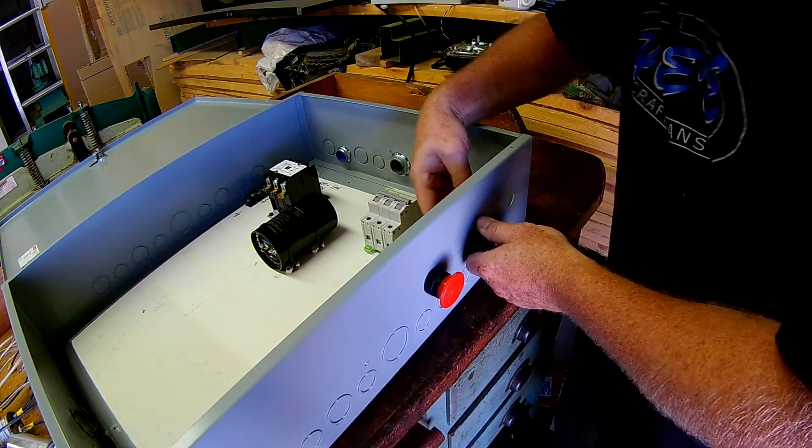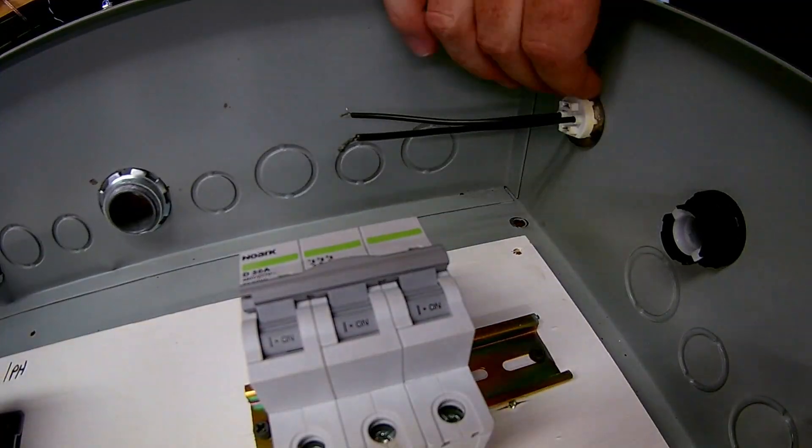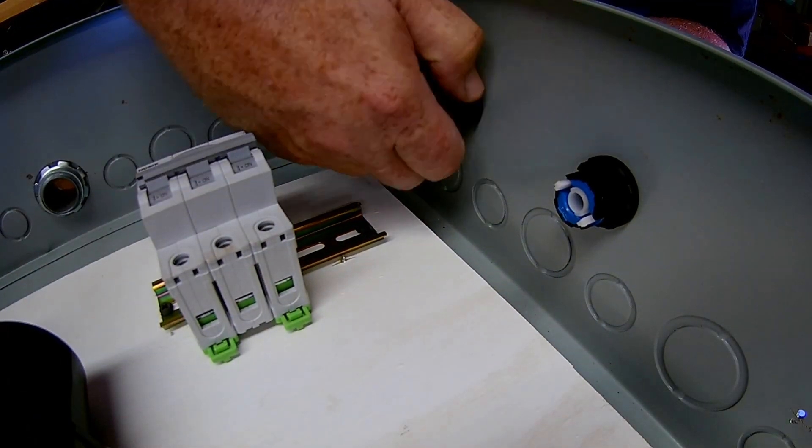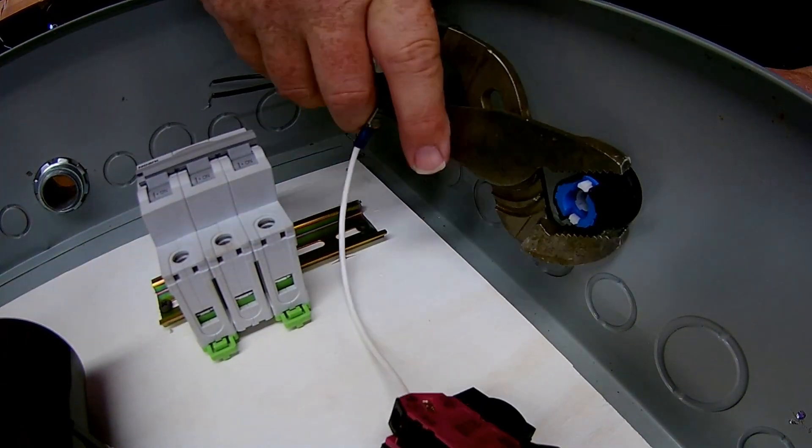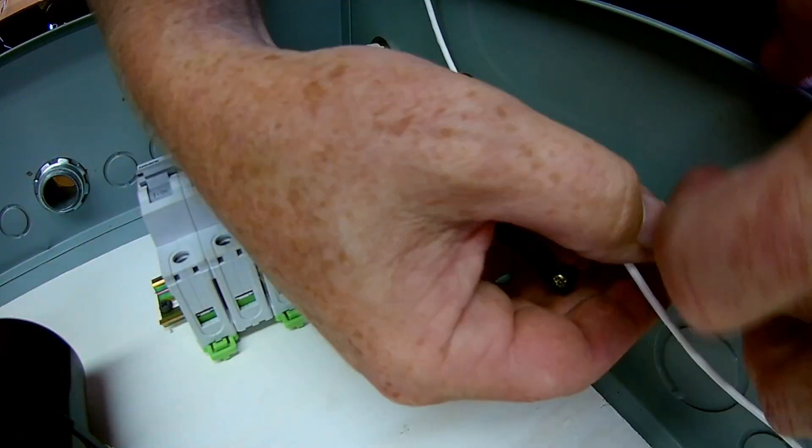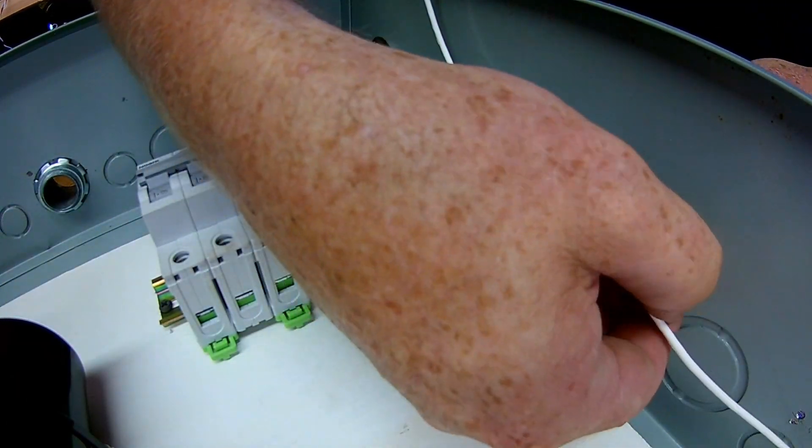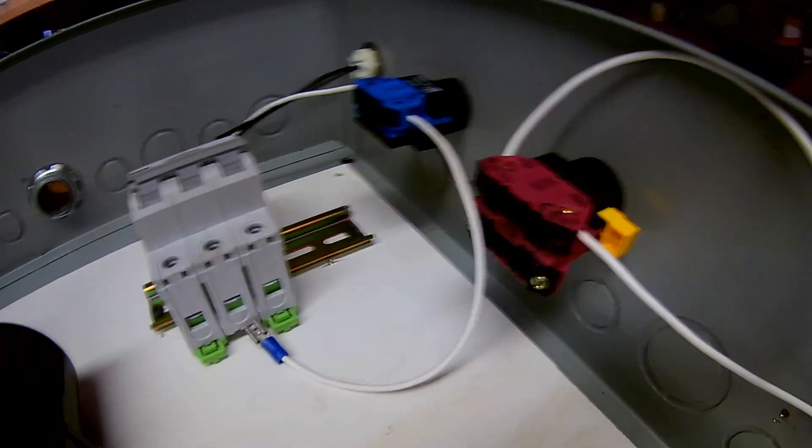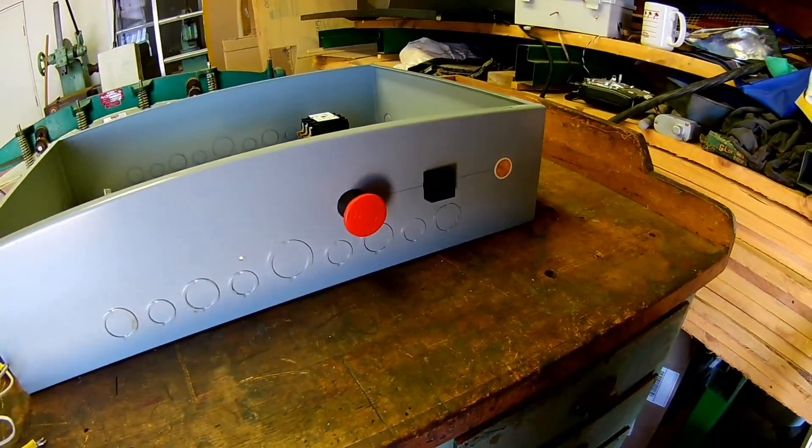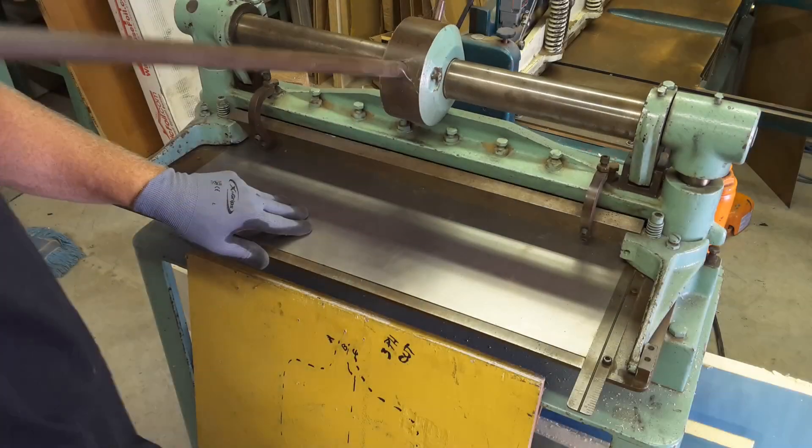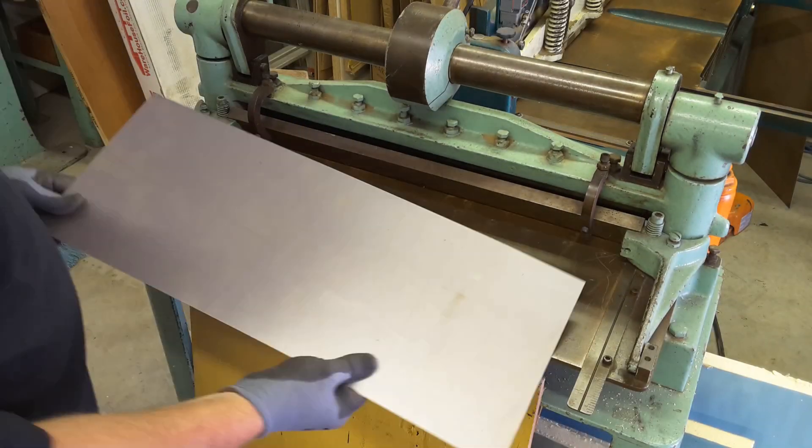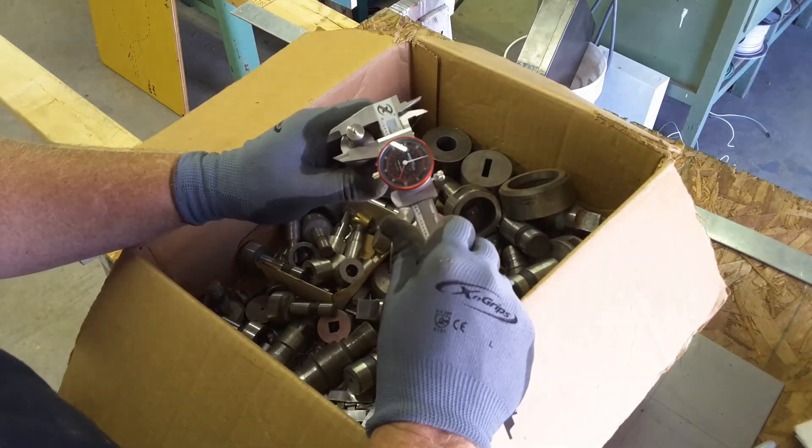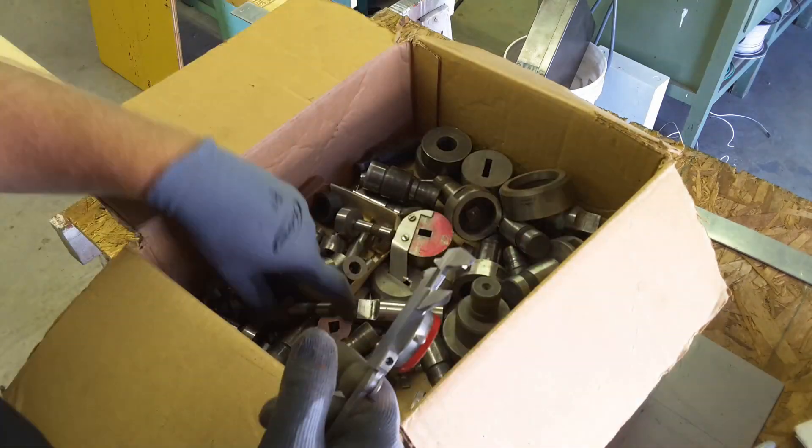I made holes for the start and stop buttons and the indicator light. With the buttons installed I clipped back on the switching mechanism.